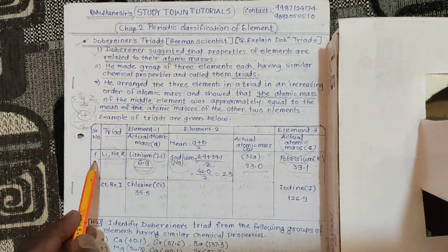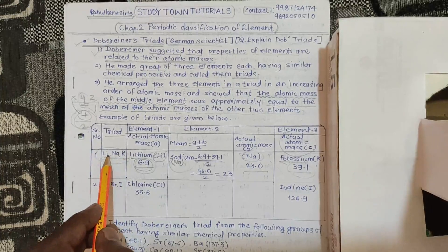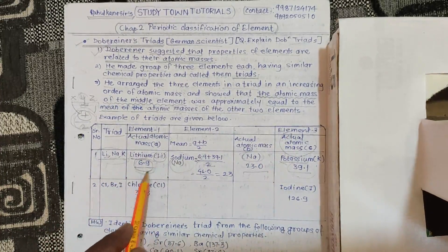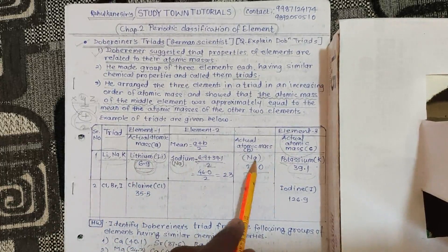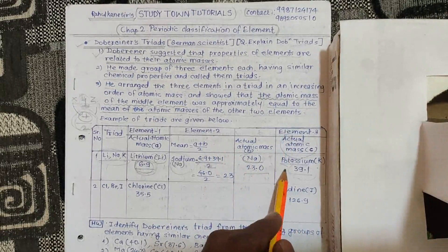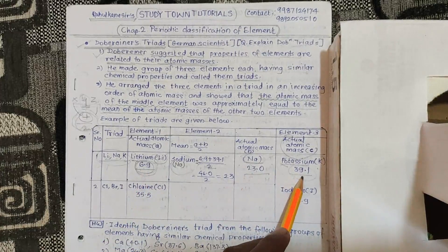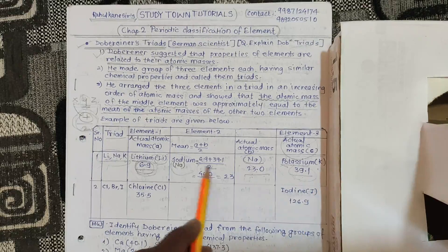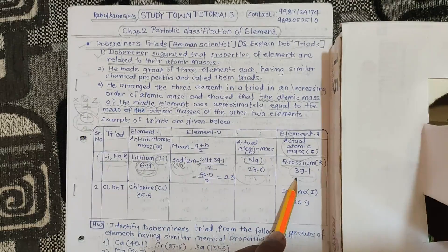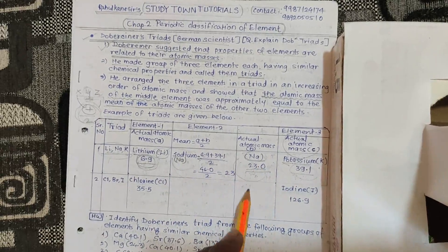For example, this triad is lithium, sodium, potassium. In our table: element 1 is lithium with atomic mass 6.9, element 2 is sodium with atomic mass 23, and element 3 is potassium with atomic mass 39.1. So 6.9, 23, 39.1 — this is increasing order. The middle element is sodium, and sodium ka jo mass hai, yah dono ke mass ke mean ke barabar hai. Sodium ka mass we know is 23.